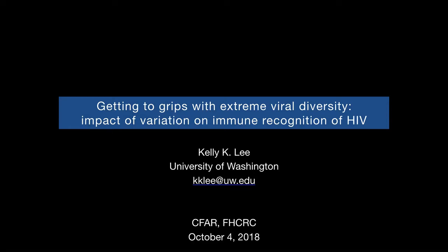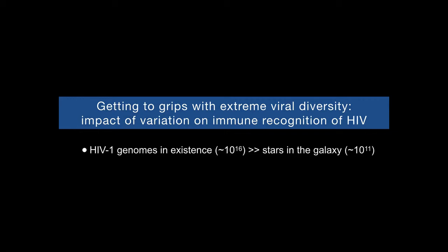I'd like to focus today on the vast diversity of envelope glycoproteins that HIV presents to the immune system, and hopefully convince you that that's an important but underexplored area that we need to understand better. It's been estimated that because of the error-prone reverse transcriptase, recombination, and HIV's rapid replication rate, the number of genomes in existence for HIV is astronomical — about 10 to the 16th power. That dwarfs the number of stars in the Milky Way galaxy. So there's a tremendous genetic diversity that we've understood for a long time to be in existence.